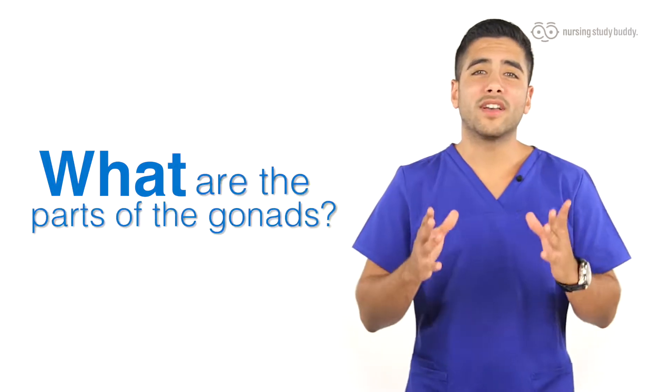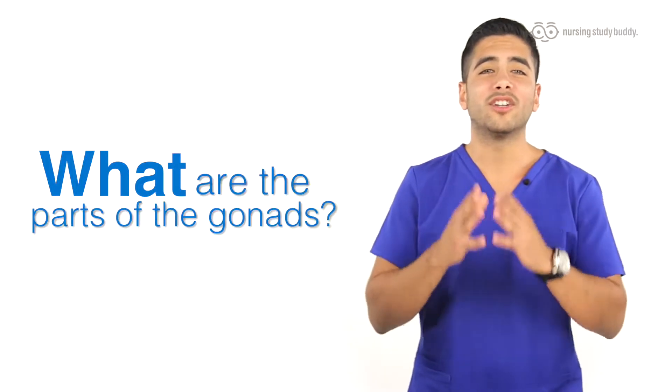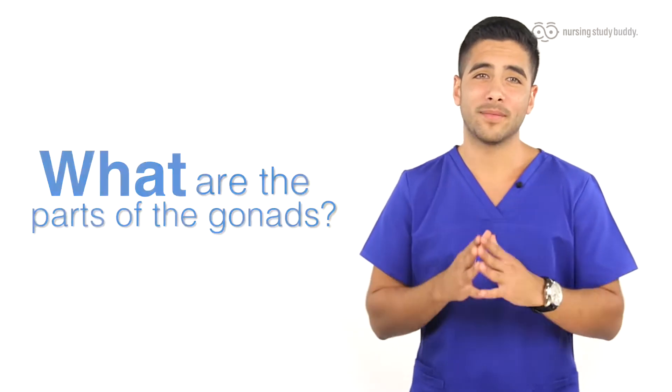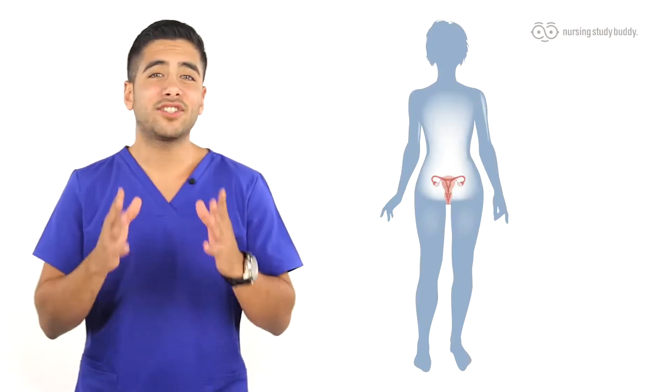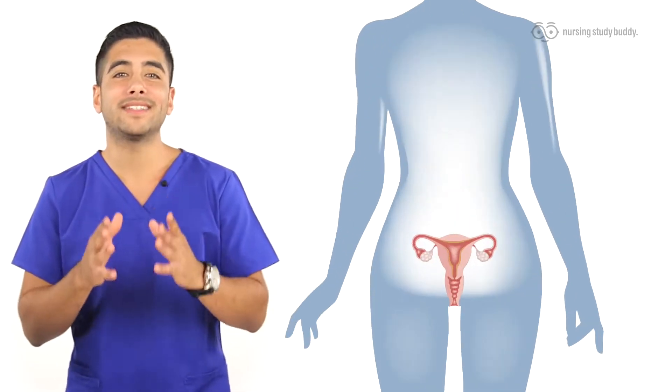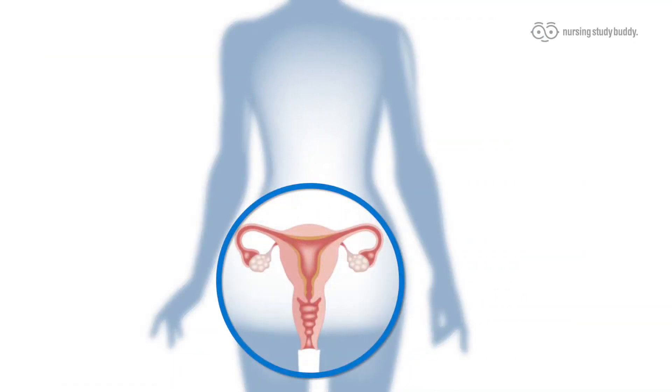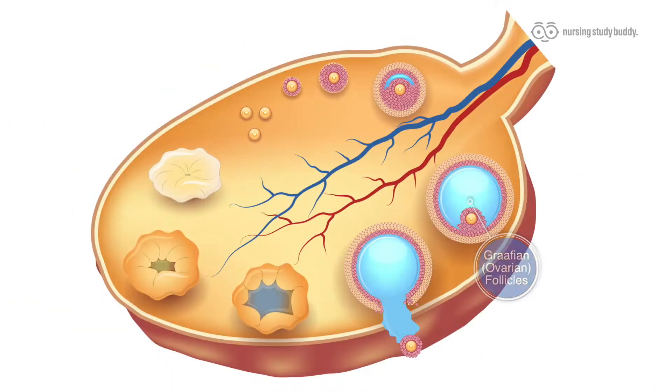Now what are the parts of the gonads that are associated with the endocrine system? Let's start with the part of the ovaries that makes estrogen. This is called ovarian follicles.